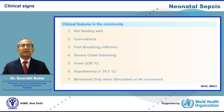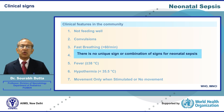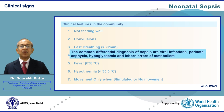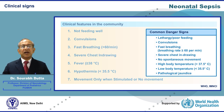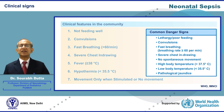The clinical signs of neonatal Sepsis are protean. There is no unique sign or combination of signs for neonatal Sepsis, and they overlap with common differential diagnoses such as viral infections, perinatal asphyxia, hypoglycemia, and inborn errors of metabolism. Based on a large multi-country study, the WHO came up with a list of seven cardinal signs of neonatal Sepsis for use in a community setting.